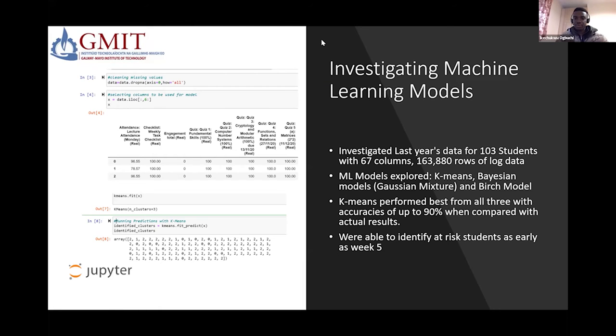We've explored three different machine learning models: the K-Means cluster model, the Bayesian model also known as Gaussian Naive Bayes, and we also explored the Bayesian model as well. In all these three models, the K-Means cluster model performed the best, giving us accuracies of up to 90% when compared to the other two. We are able to identify that as early as the fifth week of an academic year, students can be identified as being at risk or not.